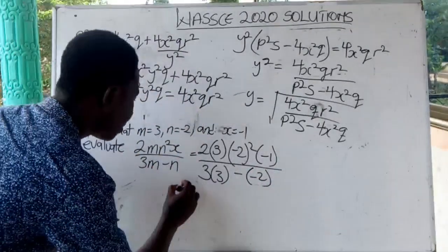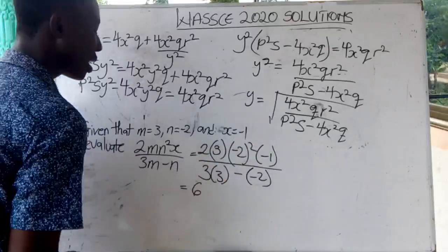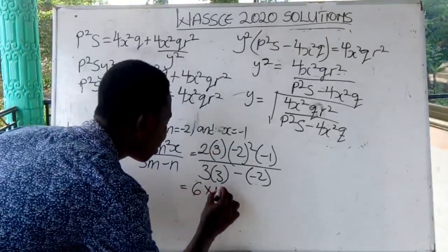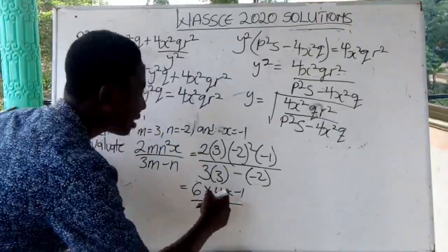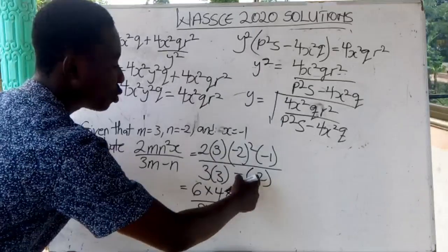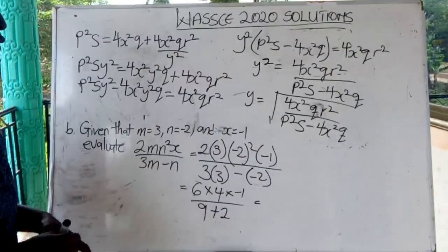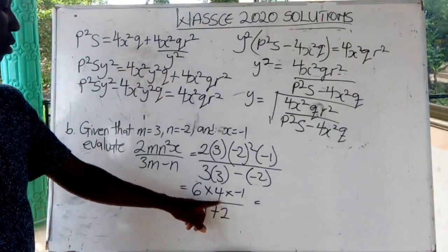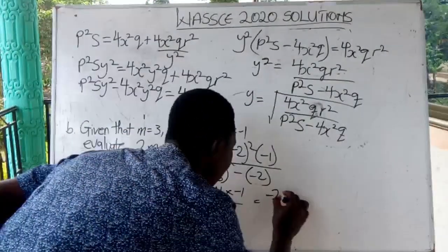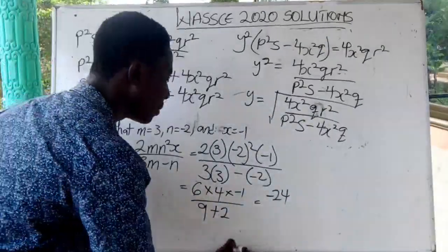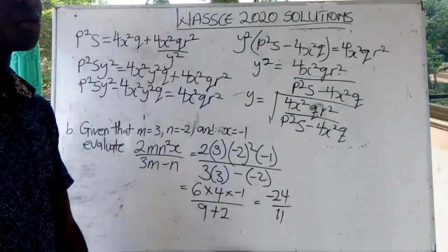Now: 2 times 3 is 6. Negative 2 squared is going to give us 4, times minus 1, all over 3 times 3 is 9, minus 2 into minus 2 gives us plus 2. So 6 times 4 is 24, times minus 1 gives minus 24. And then 9 plus 2 is 11. So the answer for question 2b is minus 24 over 11.